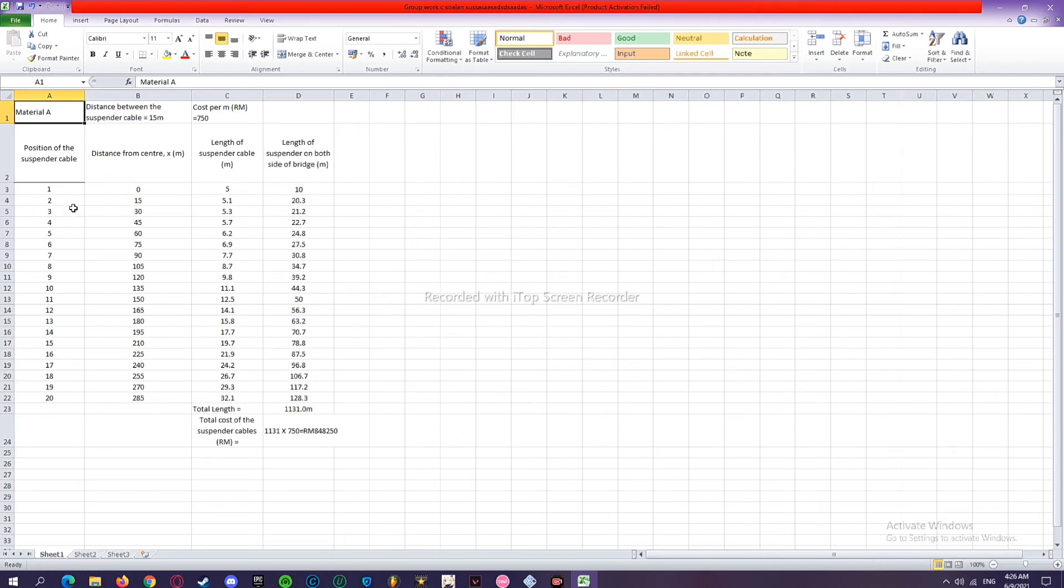For the second suspender cable, the distance from center is 15 meters. Since the second's length of suspender cable is not given, to find it, use the mathematical model that is y equals 1 divided by 3000 x power of 2 plus 5. To find the length of suspender on both sides of the bridge, the length of suspender cable will be multiplied by 4. The length of suspender cable is multiplied by 4 if only the distance from the center is not 0.